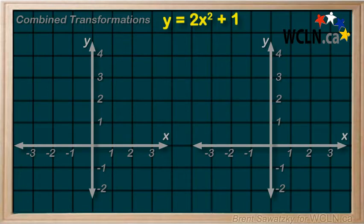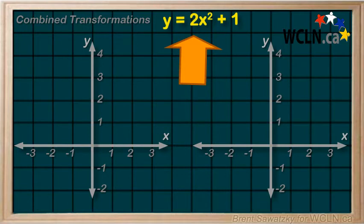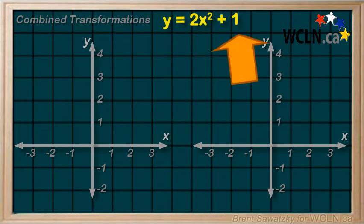In this relation, we can see that we have a combination of transformations. We have a vertical expansion by 2 here, and we also have a vertical translation up by 1 here. So which do we do first? Or does it even matter? Well, let's give it a try. We'll try both ways and see what comes of it.